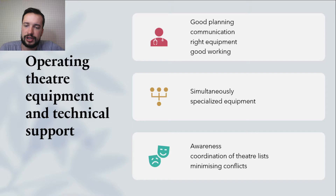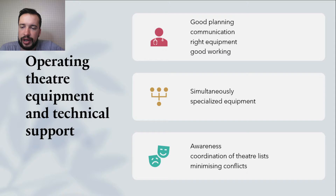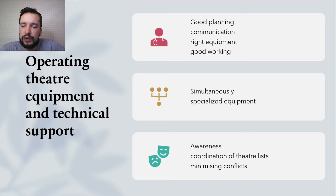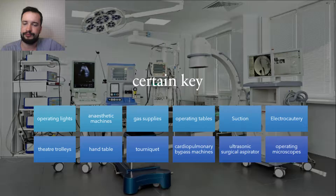Modern surgery requires specific specialized equipment. Good planning and communication is essential so that the right equipment is available in good working order for the right patient at the right time. This may be challenging to coordinate in busy operating suites where similar procedures occur simultaneously, placing conflicting demands on certain pieces of specialized equipment. Awareness of what is required for any particular operation and coordination of these lists are important for minimizing such conflicts.